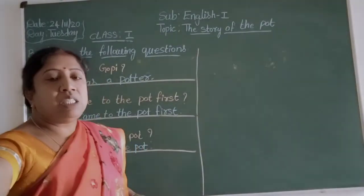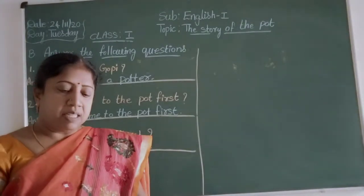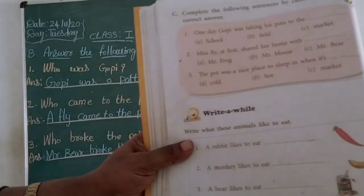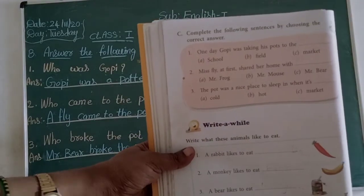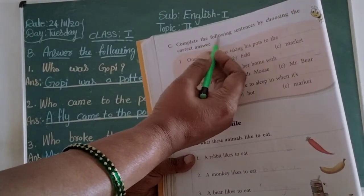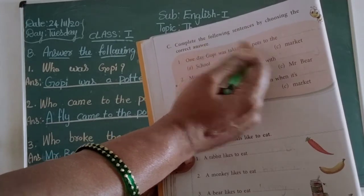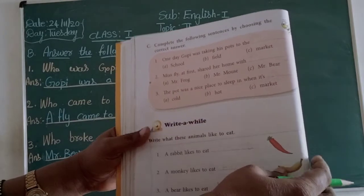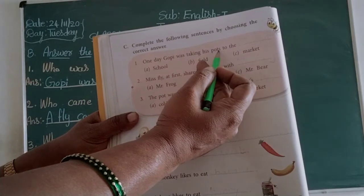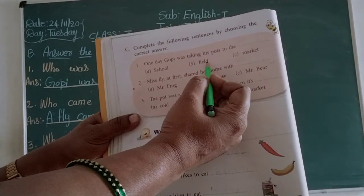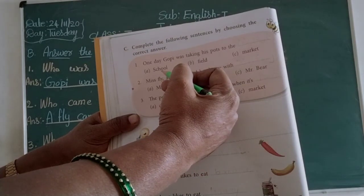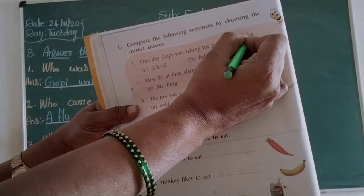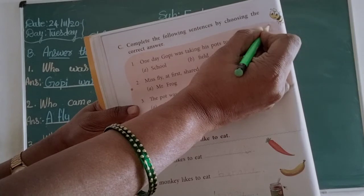Next, take out your English textbook children. Page number 68. Complete the following sentence by choosing the correct answer. First question: one day Gopi was taking his pot to the — answer is market. M-A-R-K-E-T. Market. One day Gopi was taking his pot to the market.